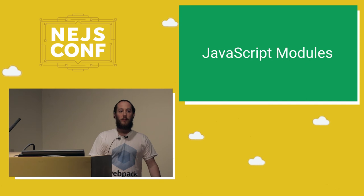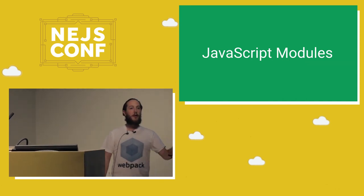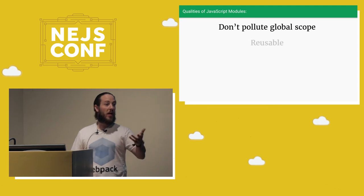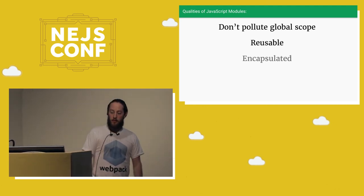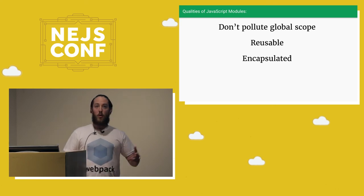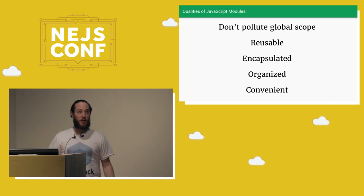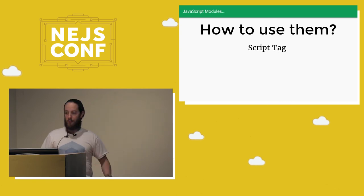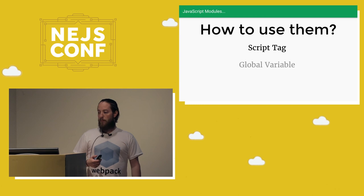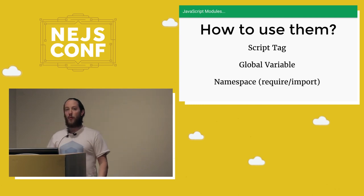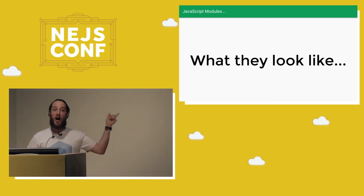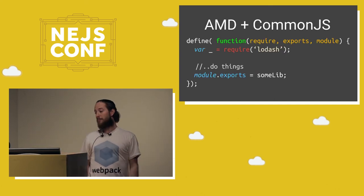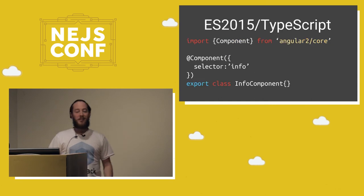Let's talk about JavaScript modules. You kind of have an idea of what they are, but I want to talk about their qualities. They don't pollute the global scope, they're reusable, they're encapsulated — how many times have you heard closures are iffy? — and they're organized and convenient, especially for Node programmers. But how do we use them? In the browser we can use script tags, but they're not really modules, they're just globals. You can use require and imports, but they all have a little bit of a different shape. We have CommonJS, AMD, AMD plus CommonJS, ES2015, and then TypeScript or Flow if you have types.